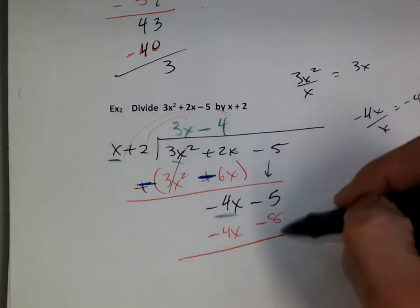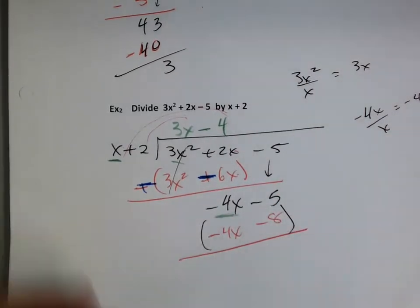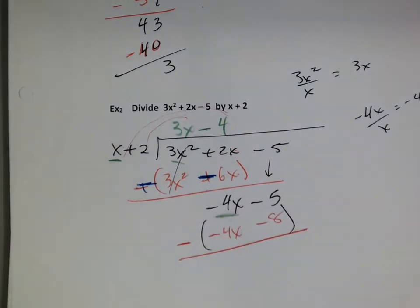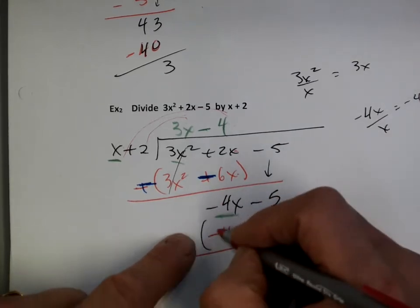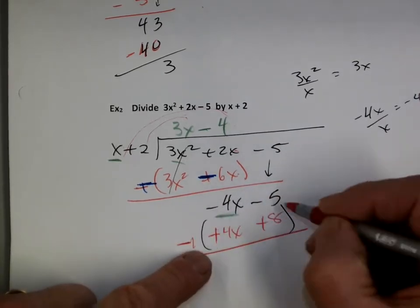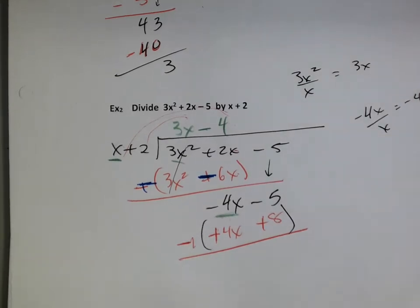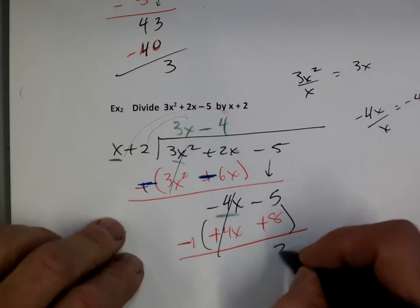And on this one, if I subtract — we've got to be careful — double negatives. So really I'm going to make that a plus, and that a plus, because double negative. So I'm going to subtract — that's gone, and I'm left with a 3.